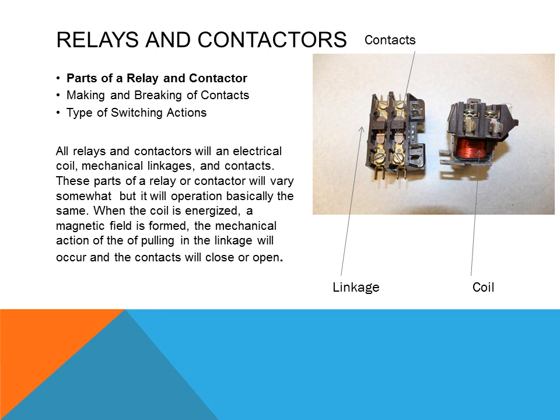Looking at the parts of a contactor, we see the contacts which stop or start the flow of current. There is a coil used to create a magnetic field to pull the contacts in, and linkages and mechanical apparatuses that allow current to break when the coil de-energizes. Springs and other connections allow the contactor or relay to work automatically.